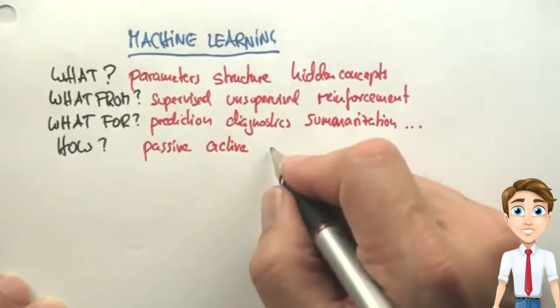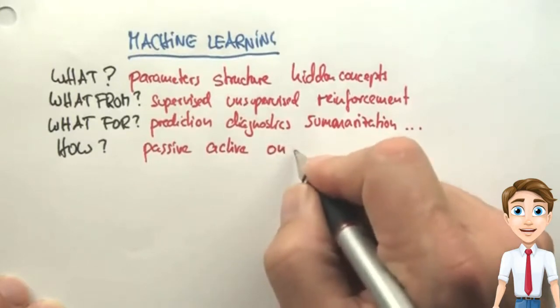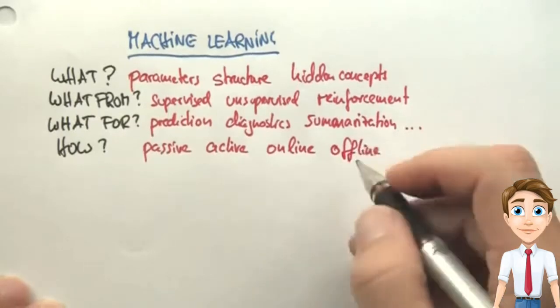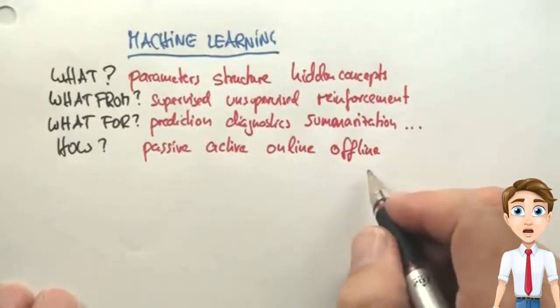Sometimes learning occurs online, which means while the data is being generated. And sometimes it is offline, which means learning occurs after the data has been generated.